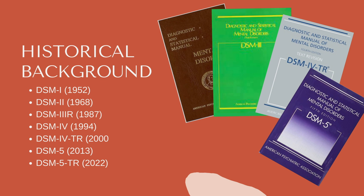The DSM-5-TR, the newest edition published in 2022, includes a comprehensive review of the impact of racism and discrimination in the diagnosis and manifestations of mental disorders. So if you can get your hands on the 5-TR, that one's going to be really beneficial to aid with cultural considerations. Each edition of the DSM reflects advancements in the understanding of mental disorders, changes in diagnostic practices, and shifts in psychiatric theory. The DSM continues to evolve to reflect ongoing developments in the field of mental health.